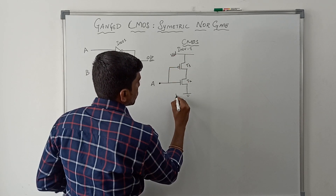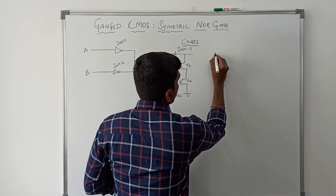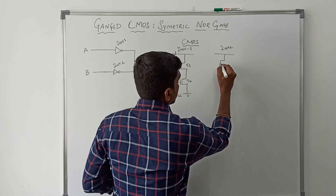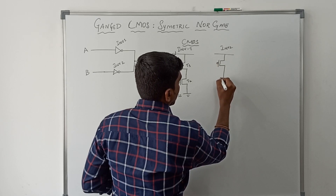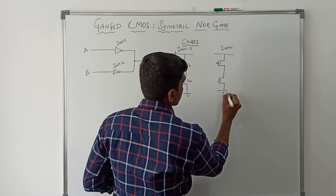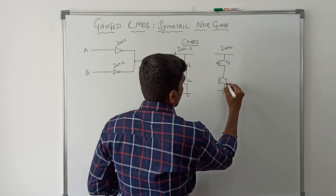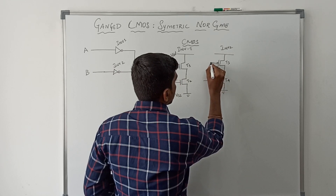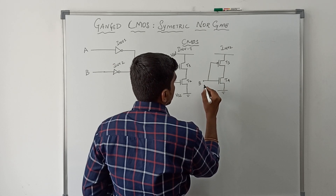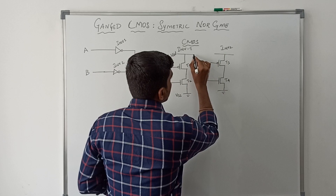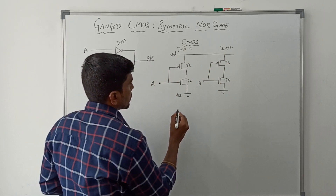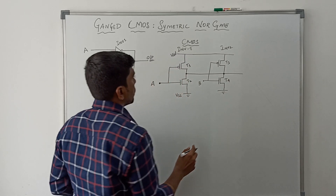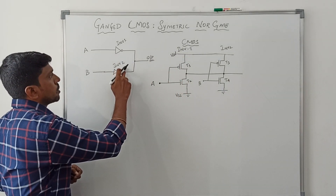VDD is connected at the top and VSS at the bottom. Now I am going to draw the structure of inverter two. Inverter two also considers two transistors: one is a PMOS transistor namely called T3, and another NMOS transistor namely called T4. The input of inverter two is B. VDD is connected at the top line and VSS at the bottom.